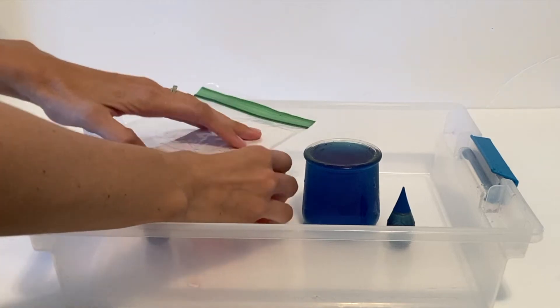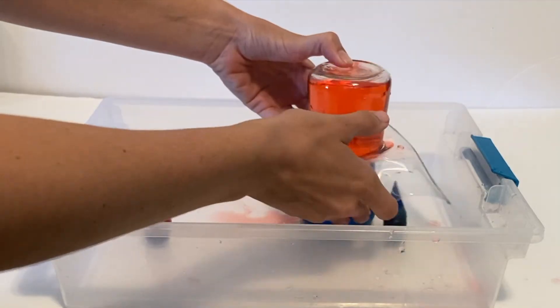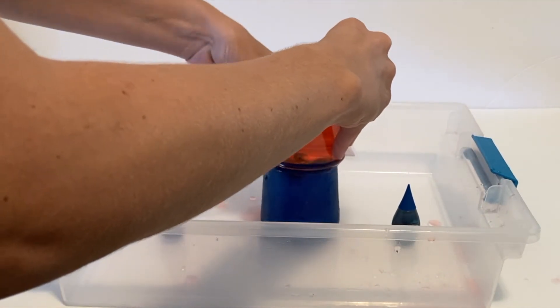Place the index card on top of the jar of hot water and carefully flip it upside down, lining it up on top of the jar of blue water before sliding the index card out from between the two jars.